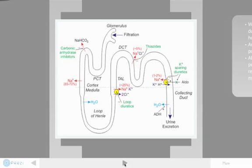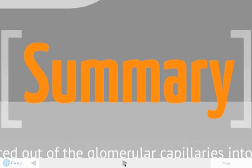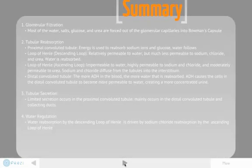In summary, first there is glomerular filtration, where most of the water, salts, glucose, and urea are forced out of the glomerular capillaries and into Bowman's capsule. Next there is tubular reabsorption. In the proximal convoluted tubule, energy is used to reabsorb sodium ions and glucose, and water follows.